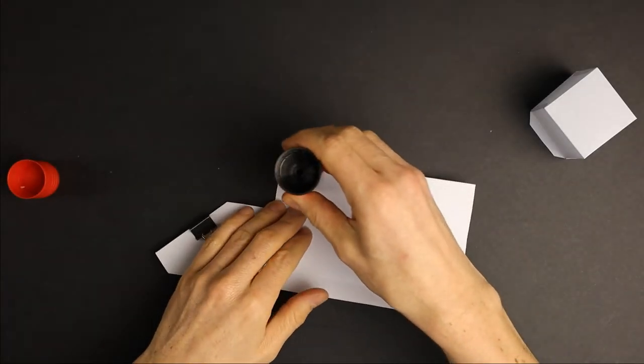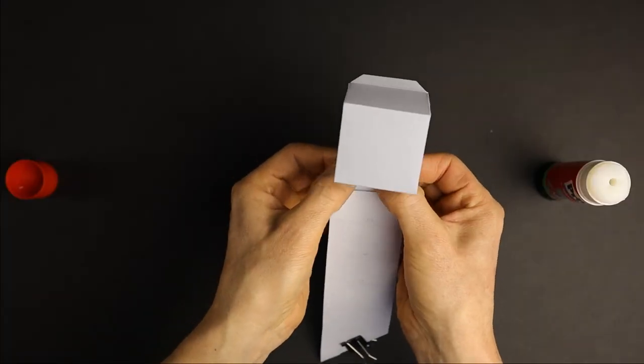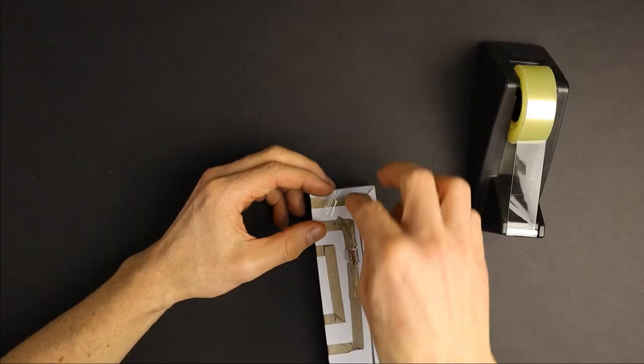To finish, fold over and glue the sides to the bottom. Glue the cube to the main part. You can also use transparent tape here.